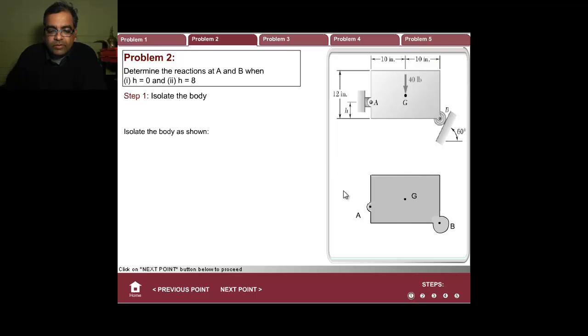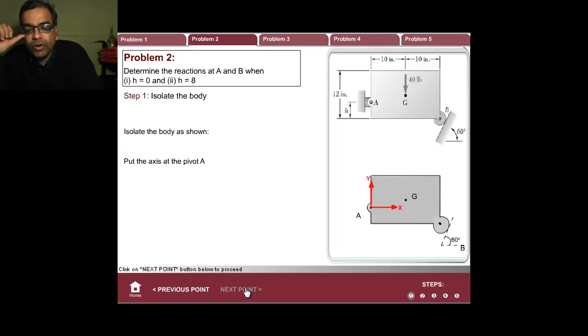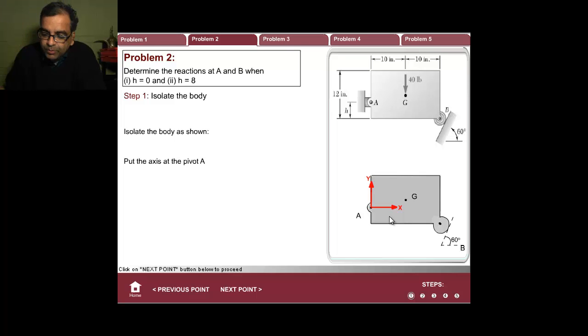Now, we're going to write down all the forces on them. But before you do that, you should always put the axis because this will help you decide. The typical trick here is to put the axis at a point which is a pivot. In this case, the hinge or pivot is at A and it's better to put the axis like this. You have a choice—you can put the axis in any direction you want, but you have to decide which way.